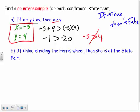That might have been a little confusing. This next part might make a little more sense using some words. If Chloe is riding the ferris wheel, then she is at the state fair. If Chloe is riding the ferris wheel, she could be somewhere else. She could be at Valley Fair. She could be at an amusement park.